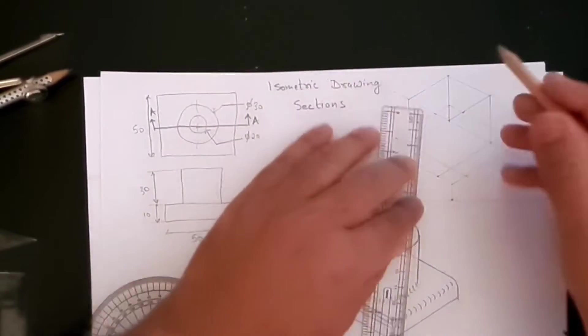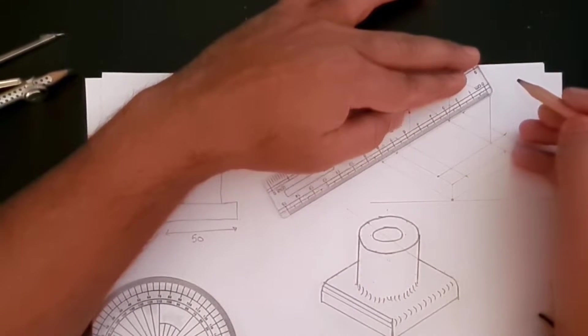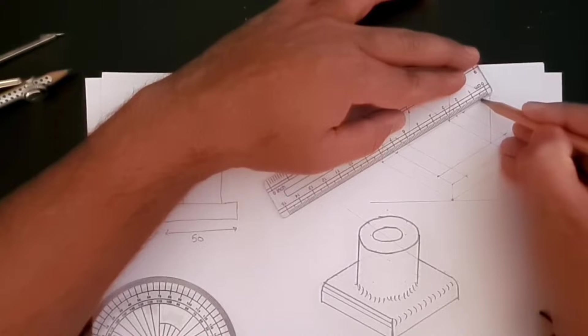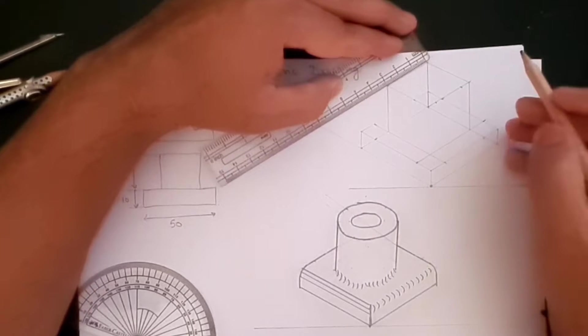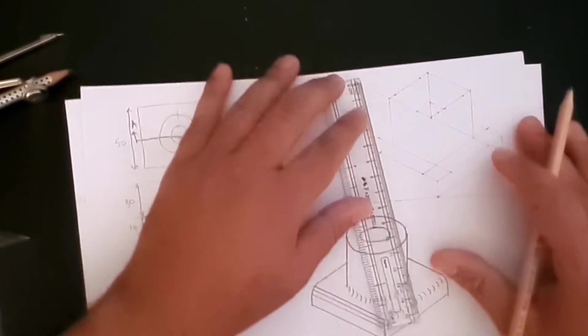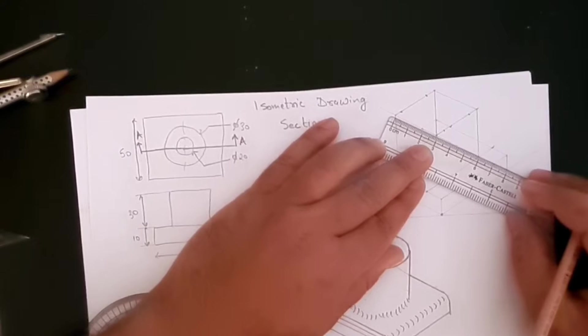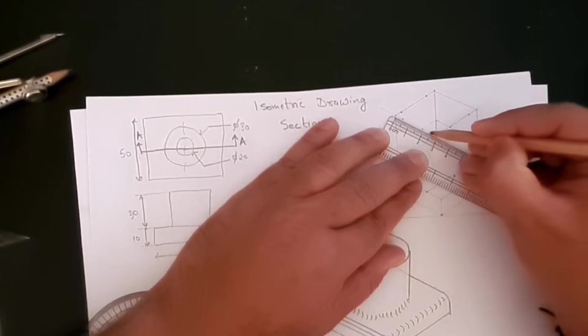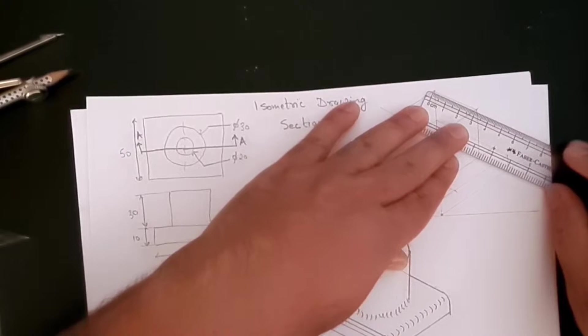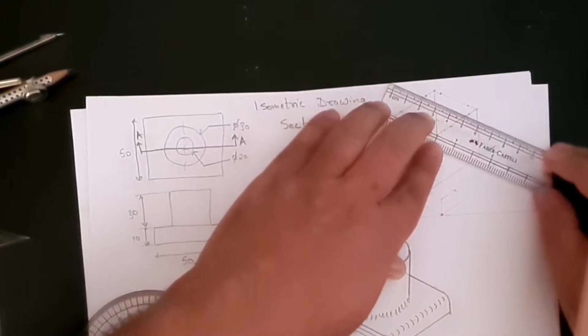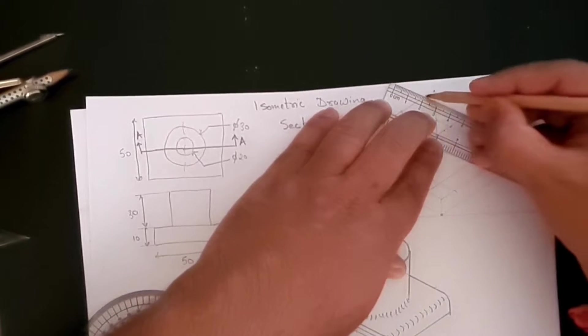And in there for the hole we need to create a 20mm hole, so 5 on each side. And that's how we are going to cut the hole in the cylinder. Let's draw that square as well.